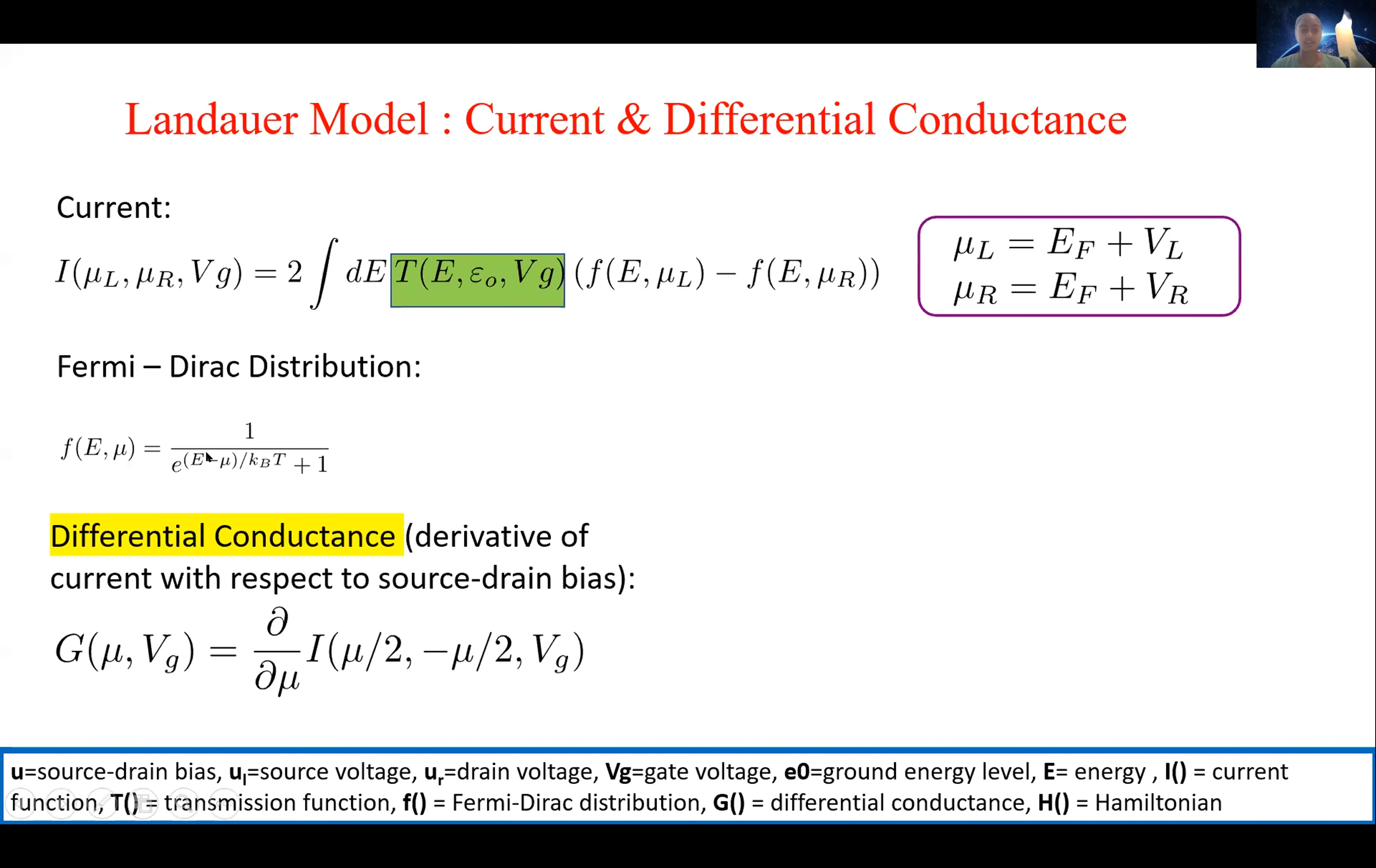But what we're interested in is not the current, but more specifically, the differential conductance. This is the derivative of the current with respect to the source drain bias. We see how this value changes as a function of our model parameters, and then we determine whether we can use the Landauer model to better understand one and two phosphorus atom systems.